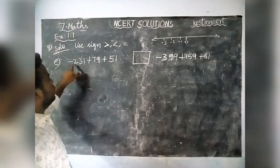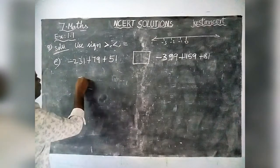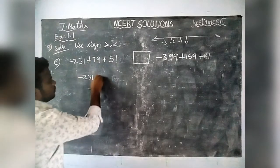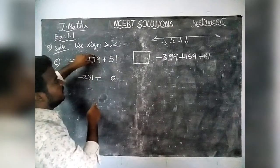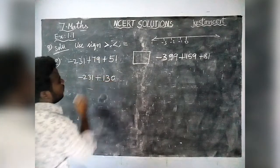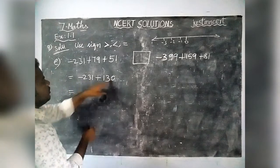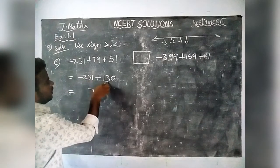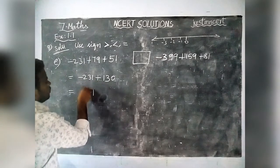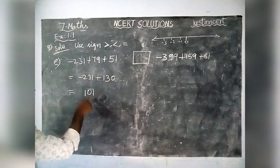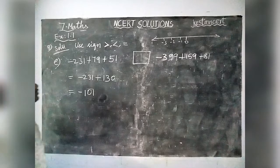Now option E: minus 231 plus 79 plus 51. The two positive numbers are 79 and 51, so we add them: 9 plus 1 is 10, carry 1; 1 plus 7 is 8, plus 5 is 13. So 79 plus 51 is equal to 130. Now the difference between 231 and 130: 1 minus 1 is 0, 3 minus 3 is 0, 2 minus 1 is 1. So the difference is 101. The greatest number is 231 with a minus sign, so the answer is minus 101.